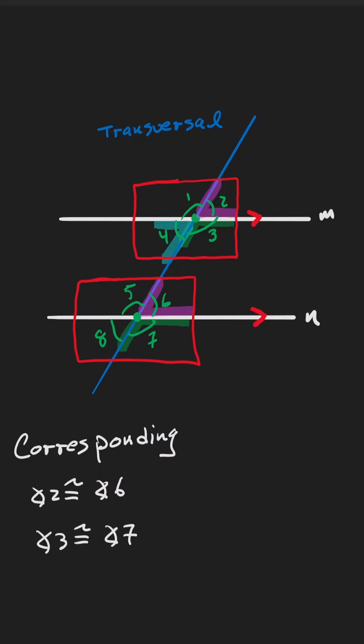The same for angle four and angle eight. They're on the bottom left hand side of the intersection. And the same with angle one and angle five.